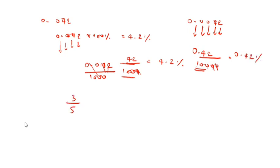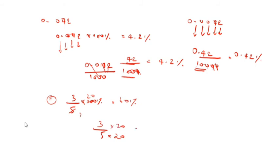Now 3 by 5. How will we write 3 by 5 into percentage? First method: 1 times 2, 5s are 10, times 2 again gives 20. So, numerator 3 times 2 is 6, giving 60 percentage. Second method: 3 by 5 — multiply by 20 to get 100. So, 60 by 100 equals 60 percentage. This is the second method.